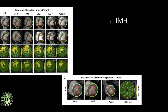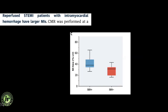Patients who did not have intramyocardial hemorrhage showed areas of late gadolinium enhancement that did not show T2-star values below 20 milliseconds and had no evidence of altered signal attenuation in those areas. These were classified as patients without intramyocardial hemorrhage. All 64 patients were studied and followed up.